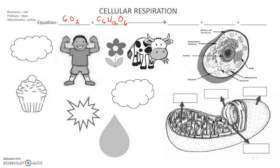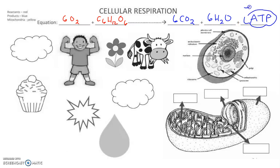Those reactants are going to give us our products: 6CO2 (6 carbon dioxide), 6 water, and then ATP, which is going to be our energy — what we can use for cell processes.